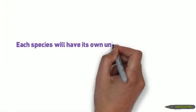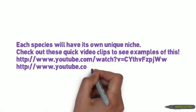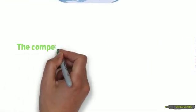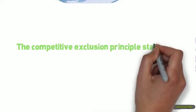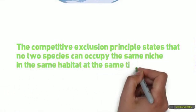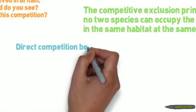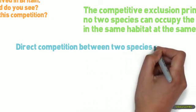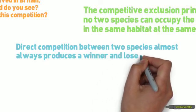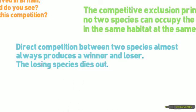Each species will have its own unique niche. The competitive exclusion principle states that no two species can occupy the same niche in the same habitat for a long period of time. Two species can't occupy the same exact niche for a very long time because competition between those two species will produce either a winner or a loser — the loser will either be forced to move or eventually dies out.